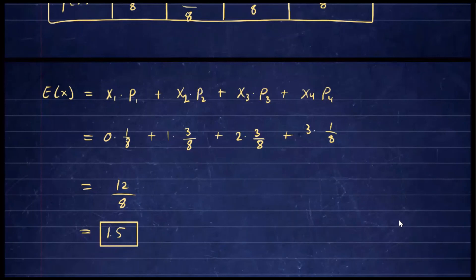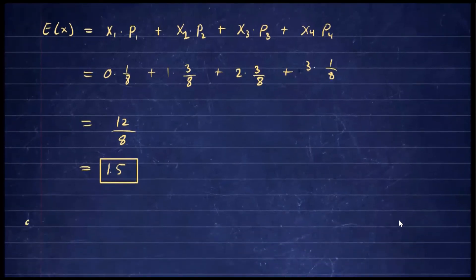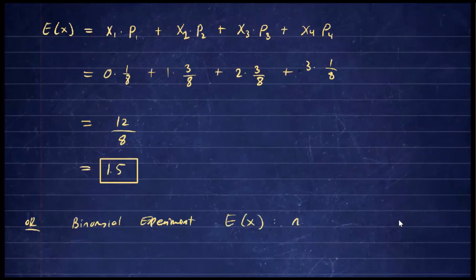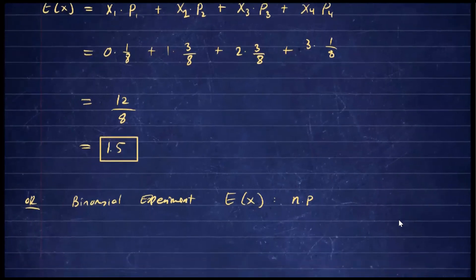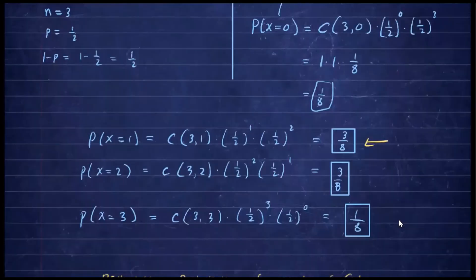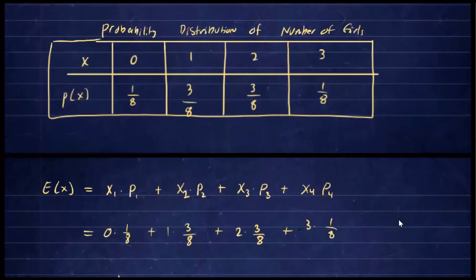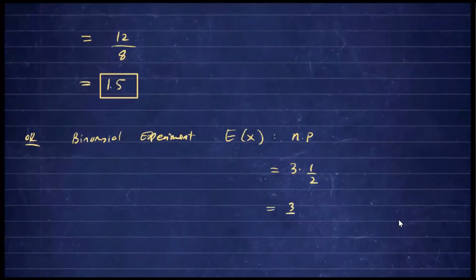Because this is a binomial experiment, we can save time using the shortcut: the expected value is simply n times p. Here n equals three and p equals one half, so the expected value is three times one half, which is three over two, or 1.5 — the same result. This shortcut works whenever the experiment is repeated n times with probability p of success.